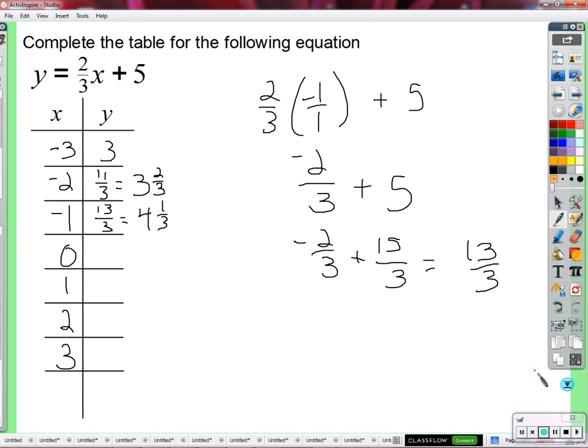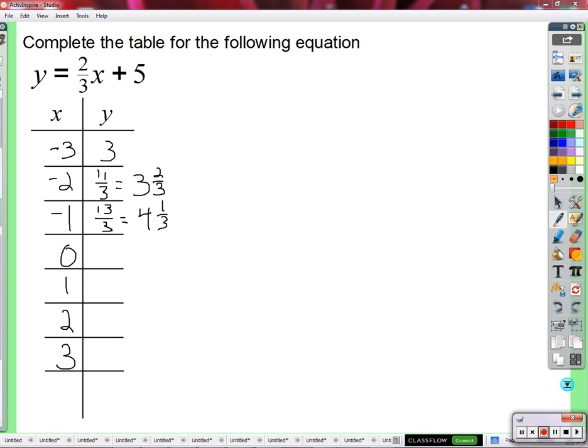All right. Let's do this next one. The easiest one, I think. It's 2 thirds times 0. I don't even need to really write 0 over 1 because I remember that anything times 0, Carter, is 0. So we get 0 plus 5, which is the easiest addition problem ever. 5.